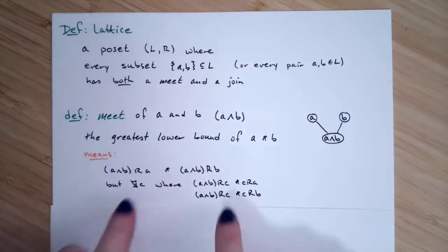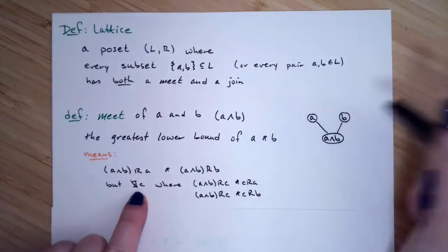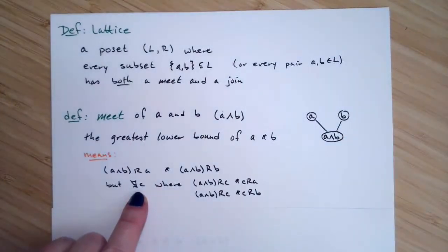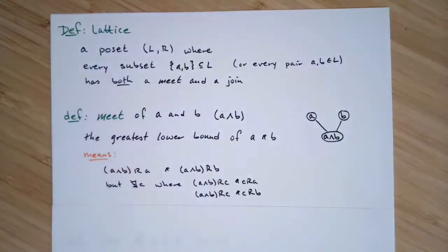But the key thing here is that there's nobody that you travel that's between A and its meet or B and its meet that you could also get to from the other guy. In other words, you go down the Hasse diagram, the meet is the first vertex that you can get to from both A and B.